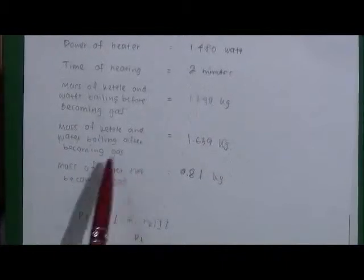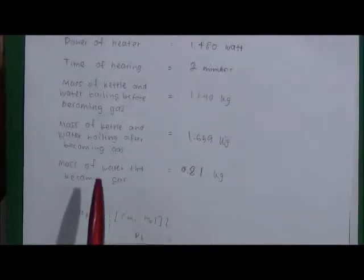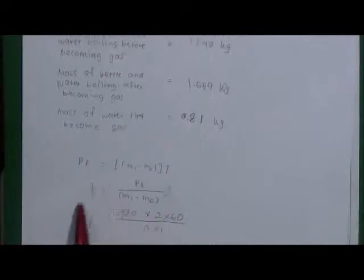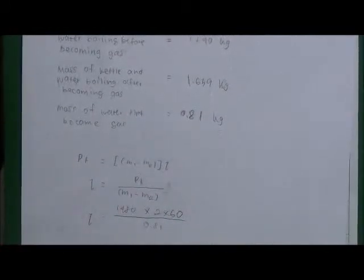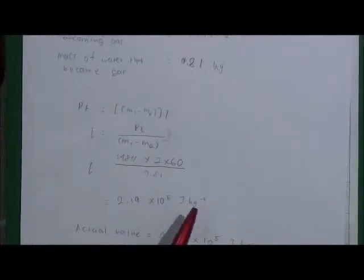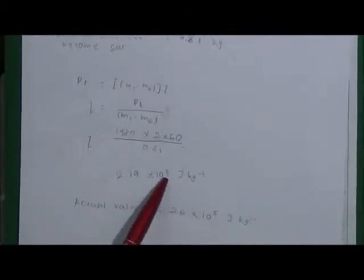So, the mass of water that became gas is 0.81. So, I plugged it into this formula. So, what I got is 2.19 times 10 to the power of 5.